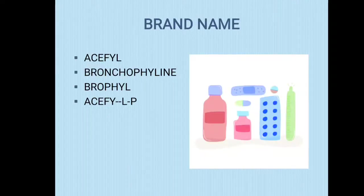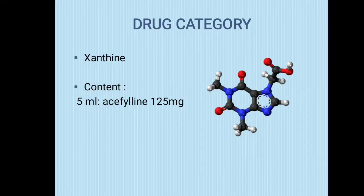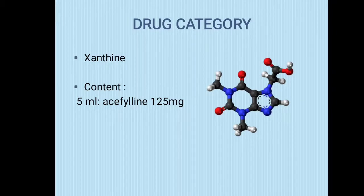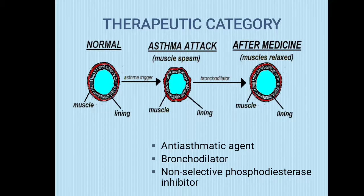As you can see in the previous slide, its brand names include Acephal, Bronchophylline, Bronchophyll, Acephyl LP, etc. Its drug category belongs to the xanthine family, and its content is 125 mg of Acebrophylline in 5 ml of the Acephal syrup.